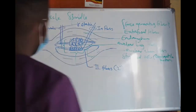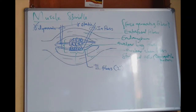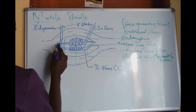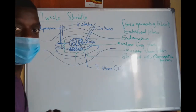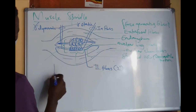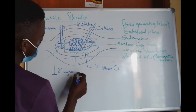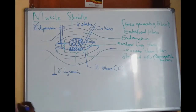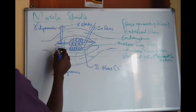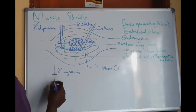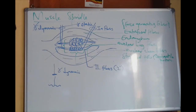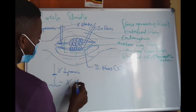Let's talk about the appearance of the nerve endings. The gamma-dynamic motor fibre has plate endings — it appears as a plate. The gamma-static fibres have a trail ending — it is just a trail like that. This is gamma-static.